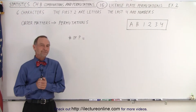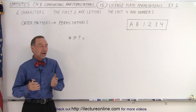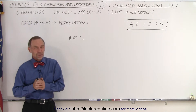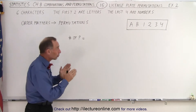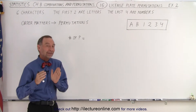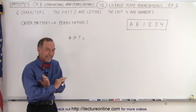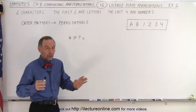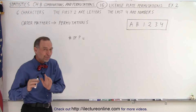Welcome to ElectronLine. What if we change the technique on putting together a license plate with six characters to make it more readable? We're going to restrict the first two characters to letters only and the last four characters to numbers only. Remember when it could have been anything for all six characters — numbers or letters — we had over 2 billion permutations.